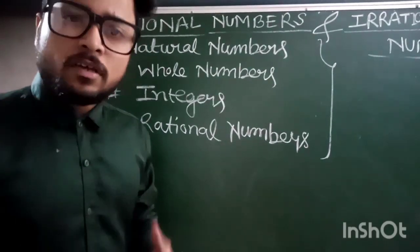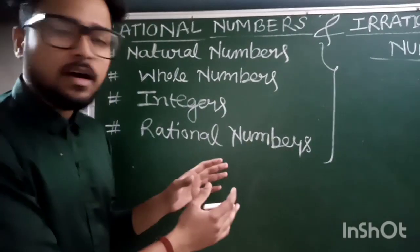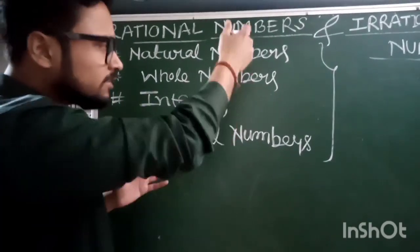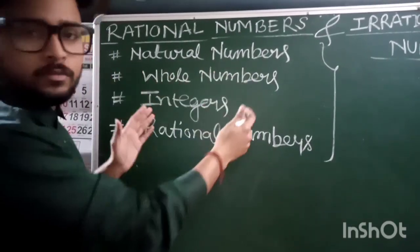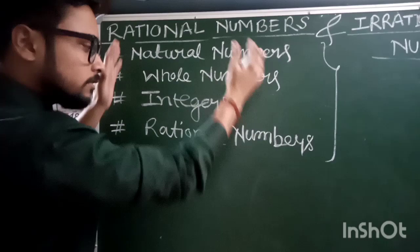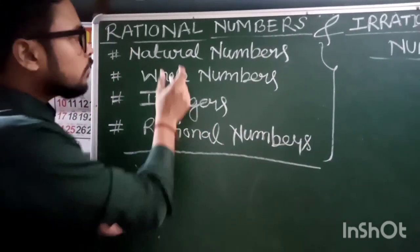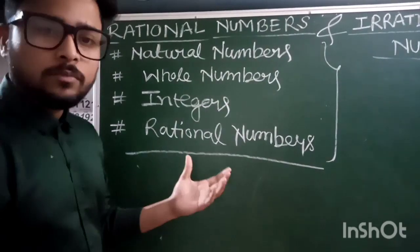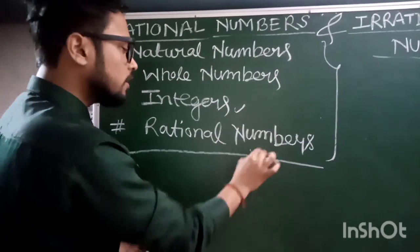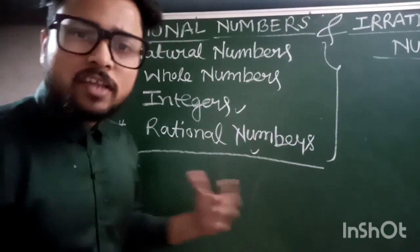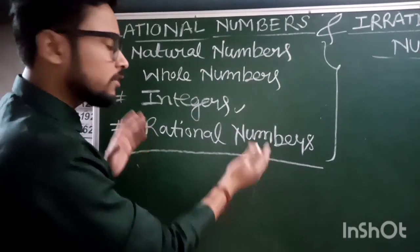For example — all natural numbers are whole numbers: true, because natural numbers are arranged within whole numbers in this order. All whole numbers are integers: true. All integers are rational numbers: true. But the vice versa of this order is not true — not all rational numbers are integers.